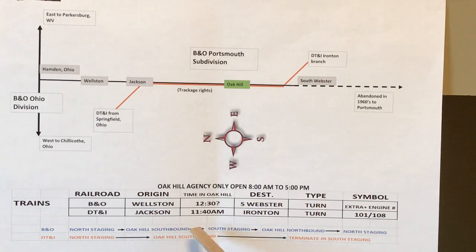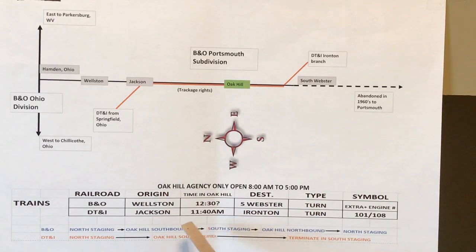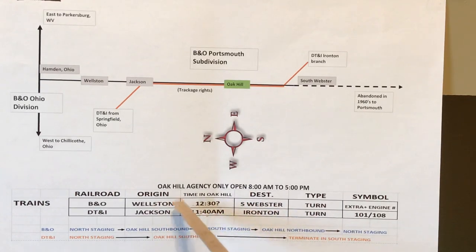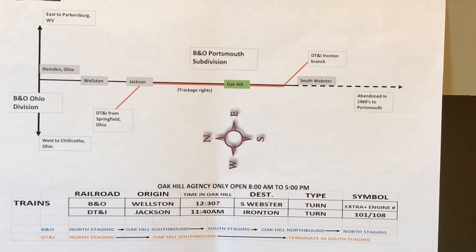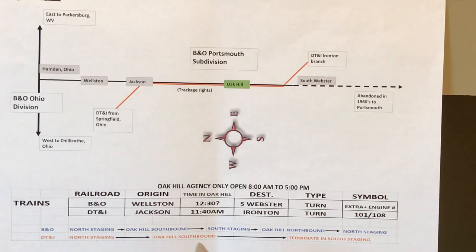I'm going to sort of flip these a little bit because I want to have some meets — I want the B&O switching to be interfered with by the DT&I train. So I'm going to have the B&O train run first, and while it's switching in Oak Hill, I'll run the DT&I train through and the B&O train has to get out of the way basically. Some days if I'm just switching by myself, I just won't even run the DT&I train. It's more of a show thing so I can take photo ops, because there are a lot of cool pictures of DT&I trains going through Oak Hill.